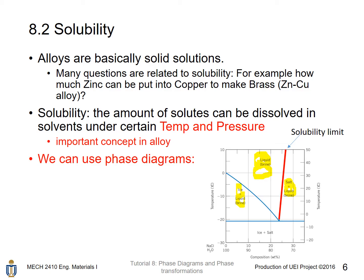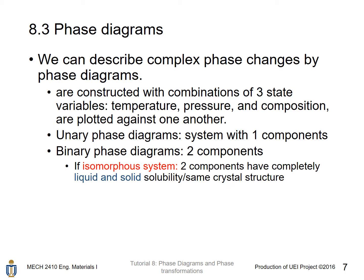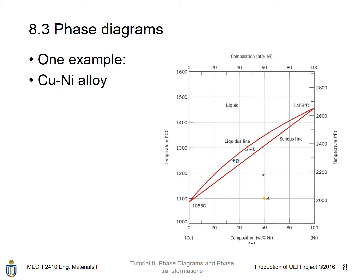For alloys, there are similar phase change diagrams. Phase diagrams are constructed with combinations of three state variables — temperature, pressure, and composition — plotted against one another. A unary phase diagram describes a system with one component; a binary phase diagram describes a system with two components. If a two-component system is isomorphous, that means the two components have complete liquid and solid solubility in each other, or the same crystal structure. One example of an isomorphous system is the copper-nickel alloy.